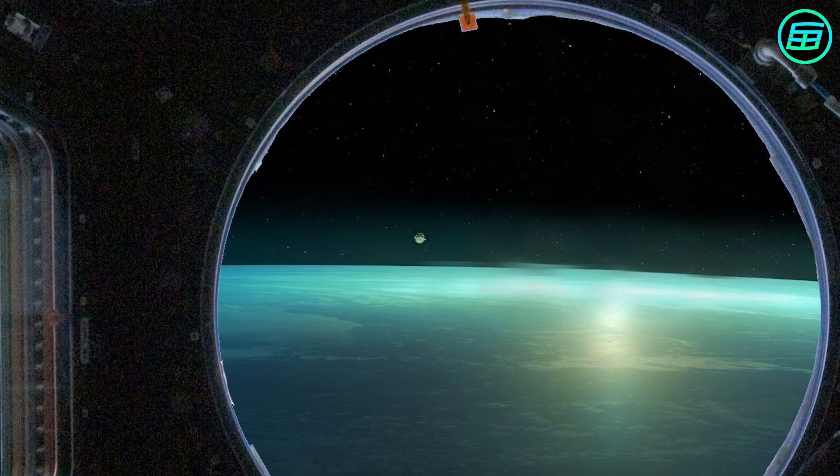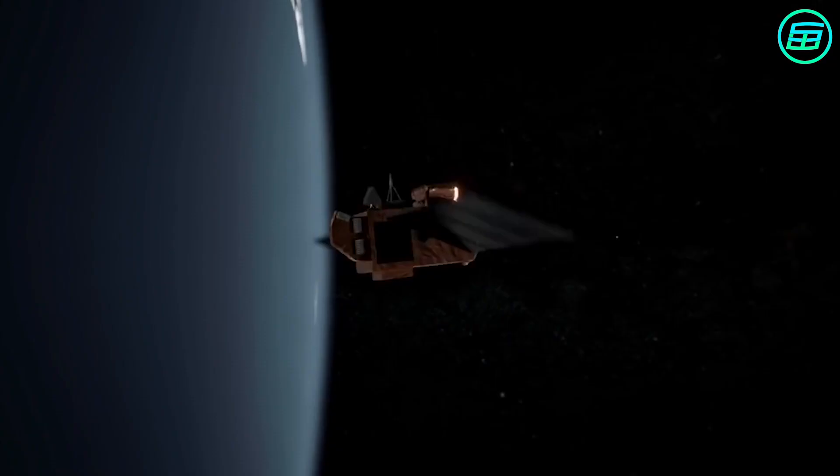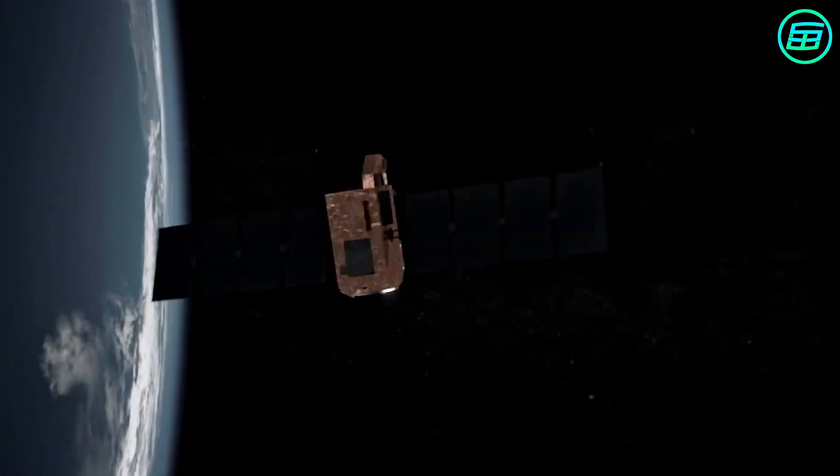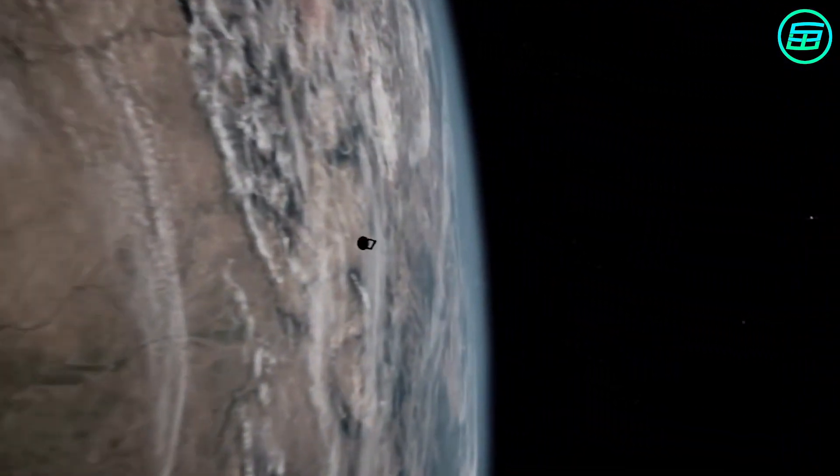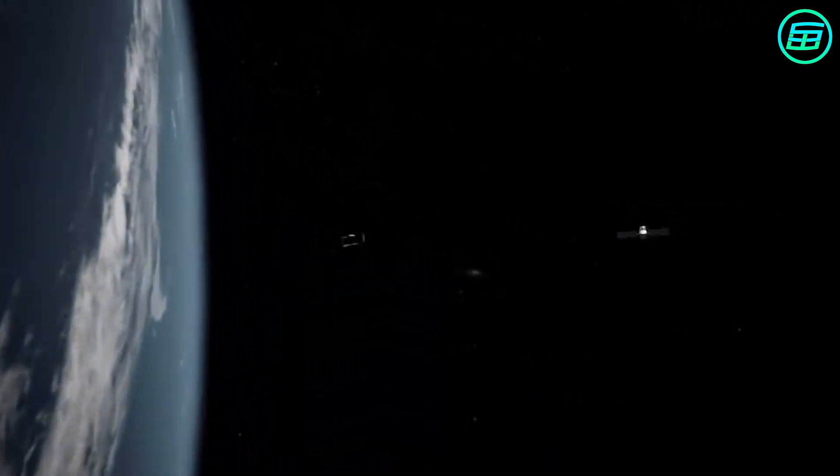An object up to 1 centimeter in size could disable an instrument or a critical flight system on a satellite. Anything above 1 centimeter could penetrate shielding, and anything larger than 10 centimeters could shatter a satellite or other spacecraft into pieces.